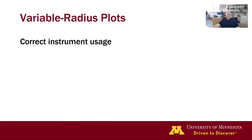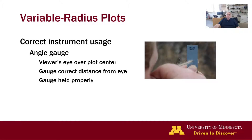To ensure proper tree tally within variable radius plots, the instrumentation must be used properly. With an angle gauge, the viewer's eye should be over plot center. Unless the gauge is built into the device or the distance of the gauge from the viewer's eye is fixed, attention should be paid to maintaining the proper distance between the gauge and the viewer's eye. The gauge should be perpendicular to the line of sight from the viewer's eye to breast height on a subject tree.